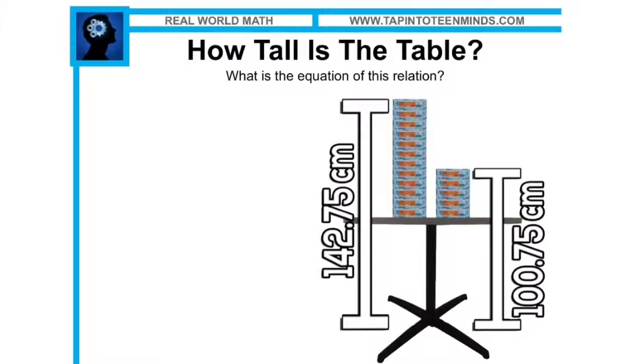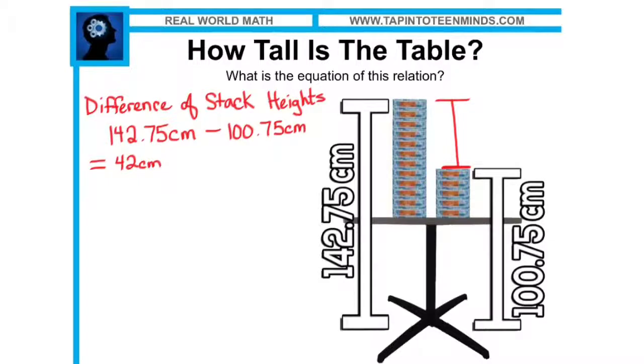Using this information, most students in my class this morning took the approach of subtracting both heights, in order to find the height, or the difference, between the heights of the two stacks. And by doing so, students found that the difference between the two stack heights is 42 centimeters.